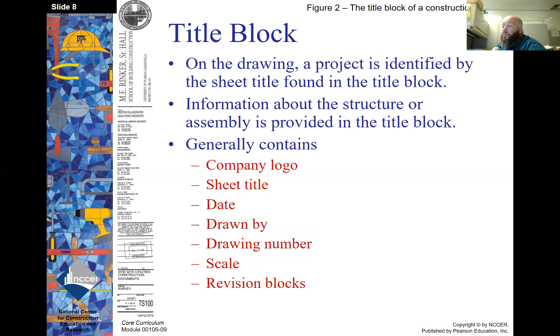The title block. There's one shown here on the left of the slide. On the drawing, a project is identified by the sheet title found in the title block. Information about the structure or assembly is provided in the title block and it generally contains the company logo, the sheet title, the date, who it was drawn by, what the drawing number is, the scale, and the revision blocks.